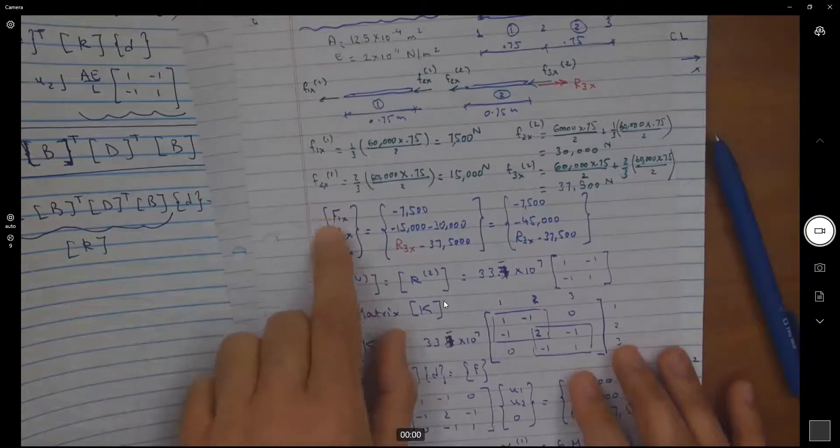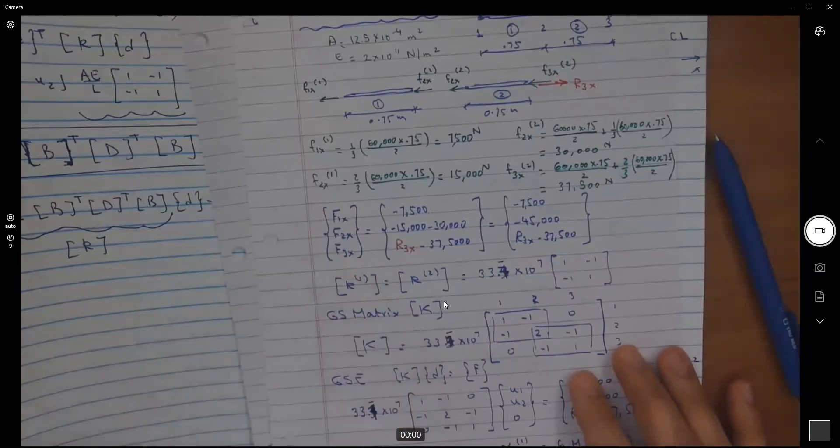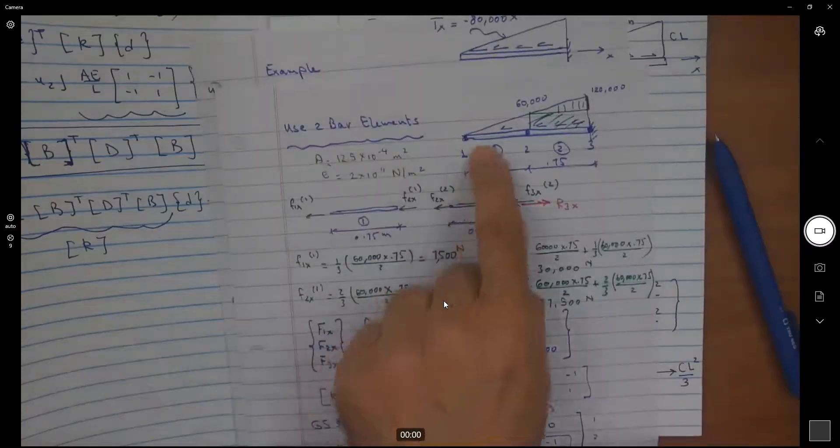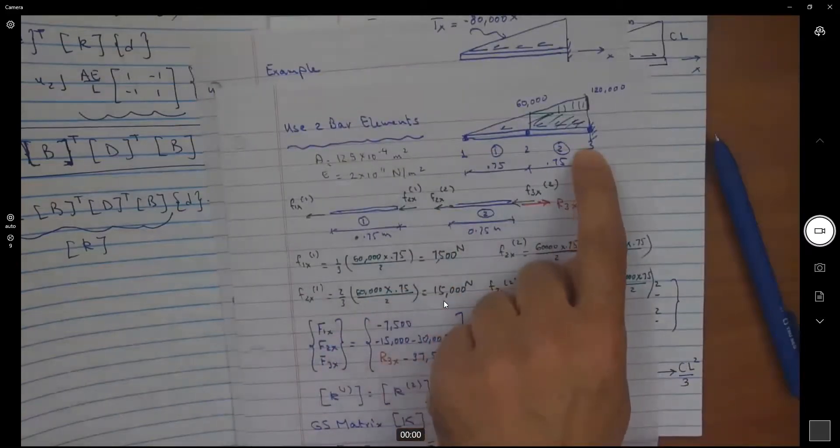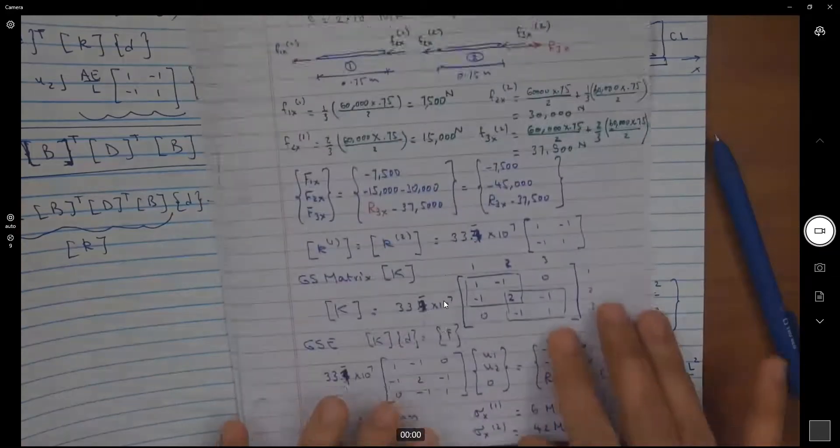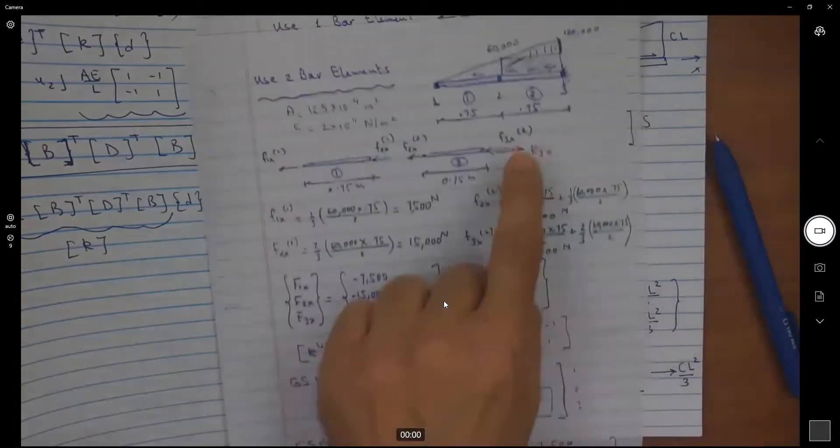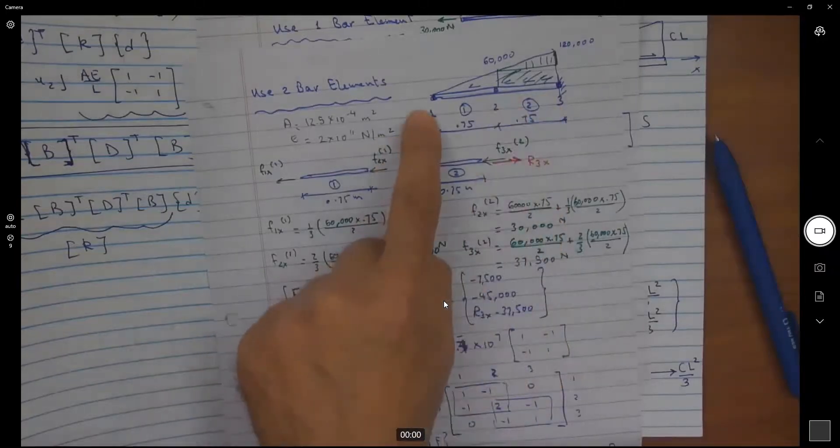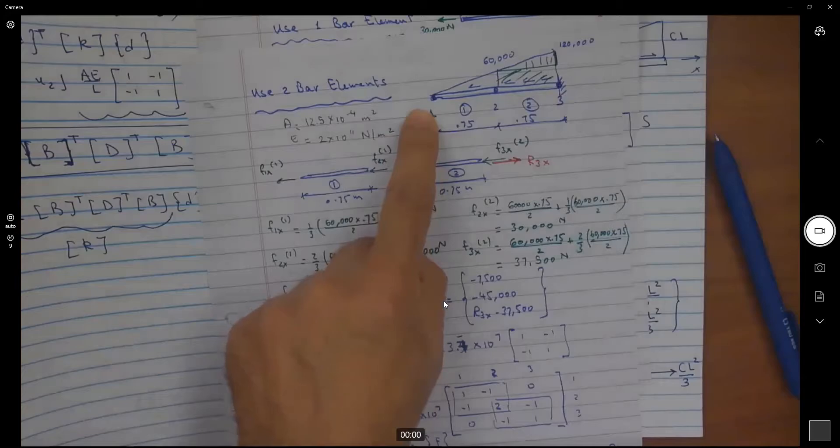Here I was able to find the equivalent nodal forces for both elements. And I wrote here my F matrix, including the support reaction. But now my problem, instead of having two nodes is having three nodes. So I'm solving for three displacements. One of them is fully constrained, is zero.